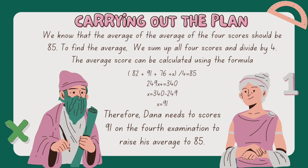To solve for X, we start by multiplying both sides of the equation by 4 to eliminate the denominator: 4 × (82 + 91 + 76 + X) / 4 = 4 × 85. This simplifies to 82 + 91 + 76 + X = 340. Combining like terms on the left side gives 249 + X = 340. To isolate X, we subtract 249 from both sides: 340 − 249 = 91.